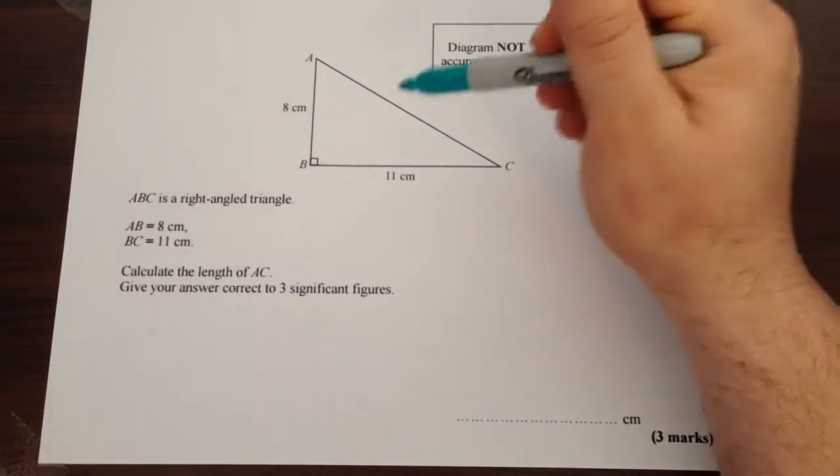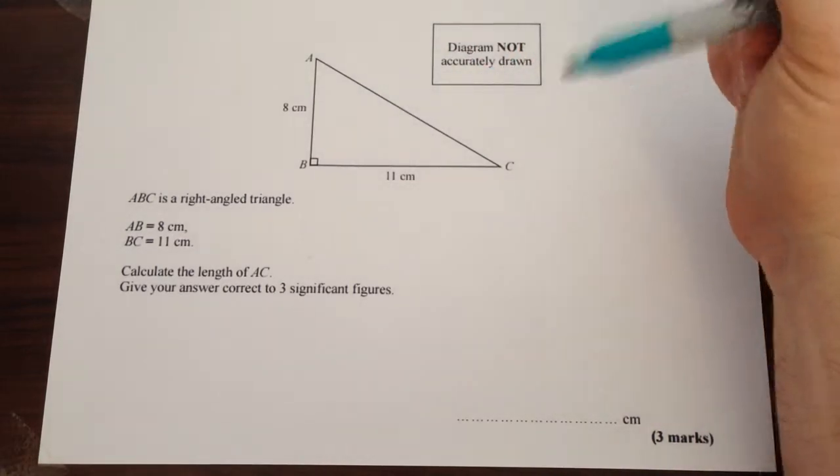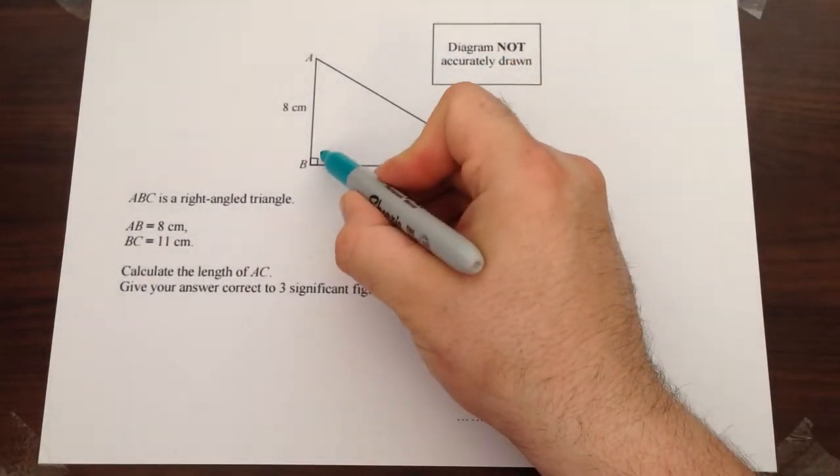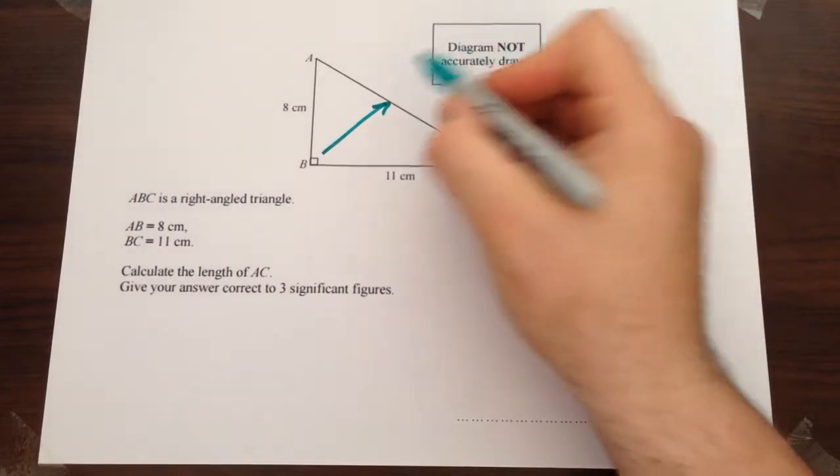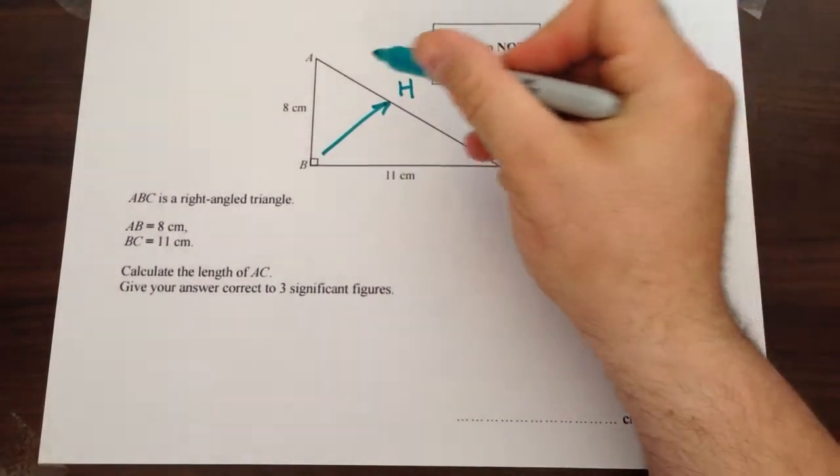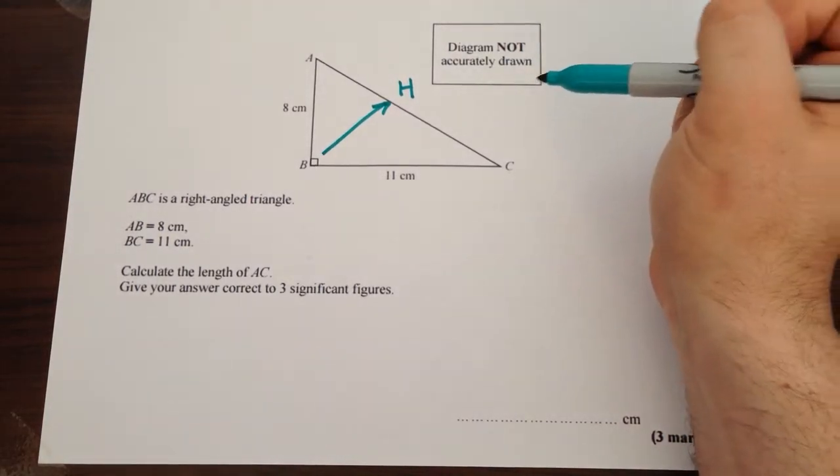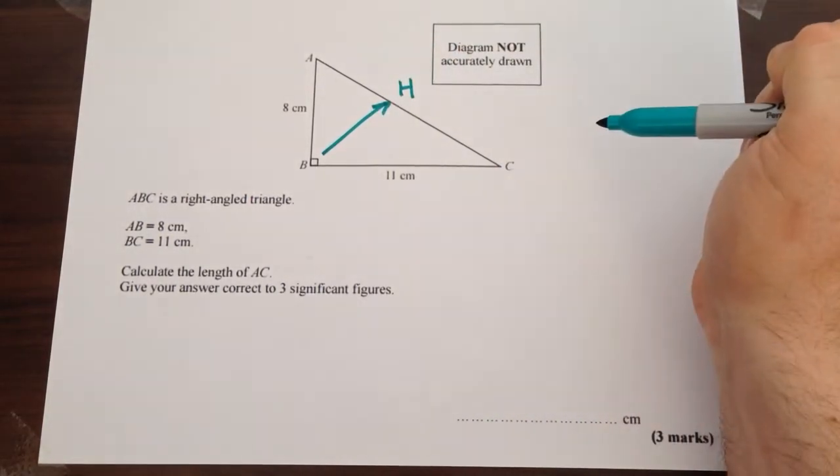Now all we need to do is decide are we going to add the two sides once we've squared them or are we going to subtract the smaller one from the larger one. And the way you decide that is you start at the right angle, draw an arrow away and label that side H for hypotenuse. Now that's the longest side of any right angle triangle and if that's the side you're trying to find you need to add the two sides once you've squared them.